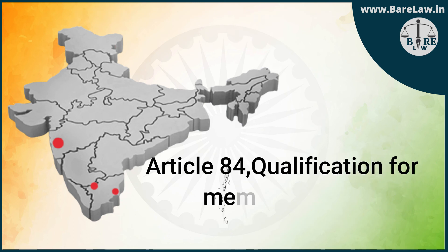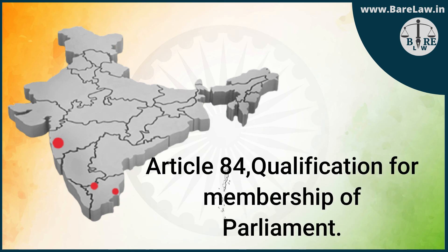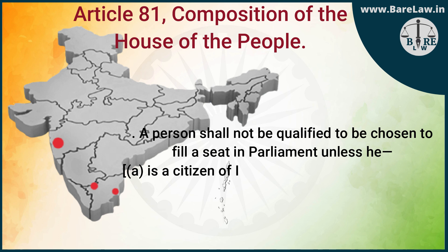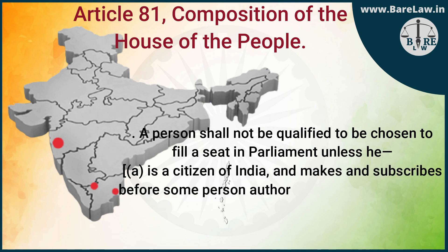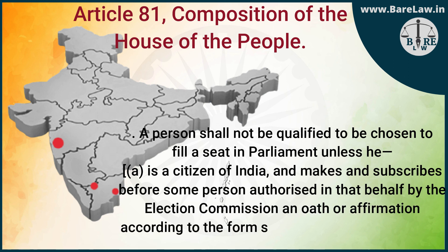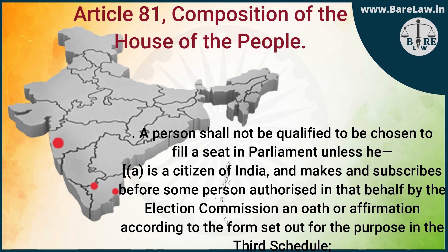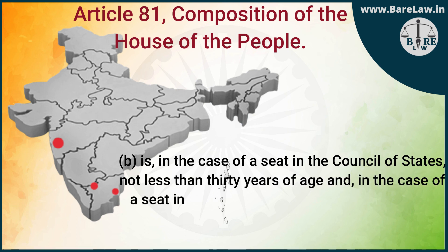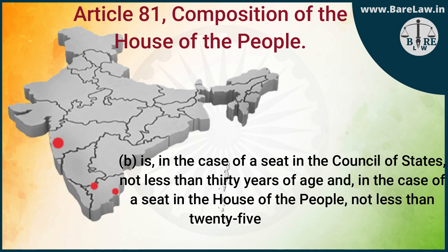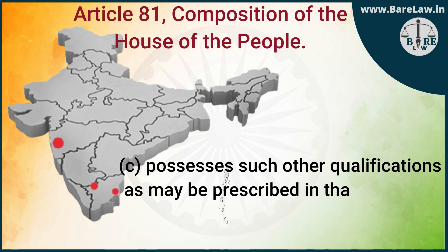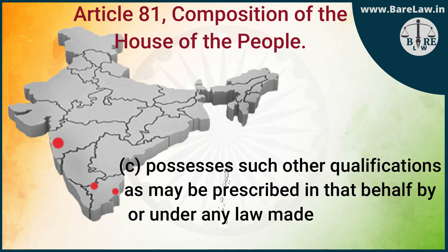Article 84: Qualification for Membership of Parliament. A person shall not be qualified to be chosen to fill a seat in Parliament unless he — (a) is a citizen of India and makes and subscribes before some person authorized in that behalf by the Election Commission an oath or affirmation according to the form set out for the purpose in the Third Schedule; (b) is, in the case of a seat in the Council of States, not less than thirty years of age, and in the case of a seat in the House of the People, not less than twenty-five years of age; and (c) possesses such other qualifications as may be prescribed in that behalf by or under any law made by Parliament.